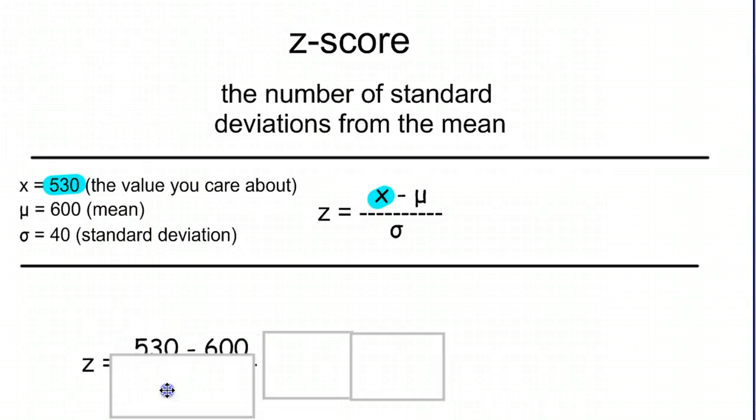If we take our values and plug them in, again we have on top x minus mu, our 530 minus our 600 on top, and that's divided by our standard deviation of 40. 530 minus 600 is negative 70.